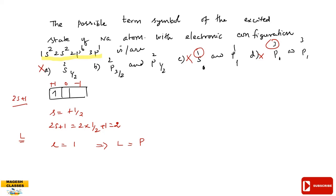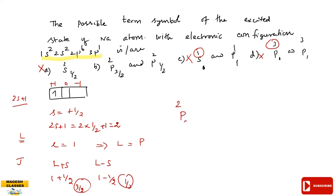To find J: L equals 1, S equals one-half. So J equals L plus S equals 3/2 and J equals L minus S equals 1/2. The possible terms are 2P(3/2) and 2P(1/2). The answer is B.